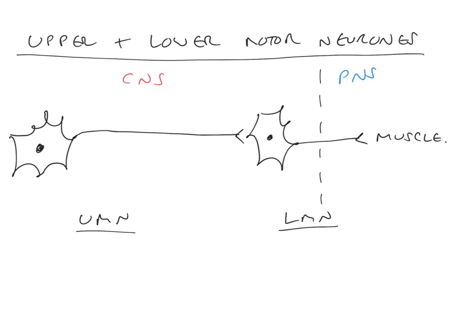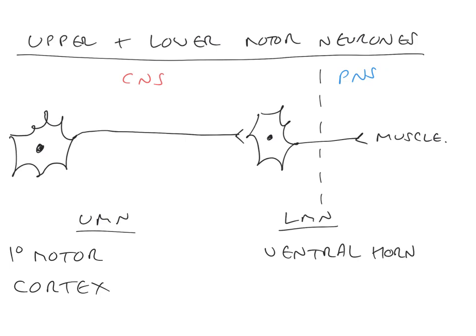The cell bodies of upper motor neurons are found mainly in the primary motor cortex — the pre-central gyrus of the frontal lobe. The locations of lower motor neuron cell bodies are more varied: the majority are found within the ventral horn of the spinal cord.